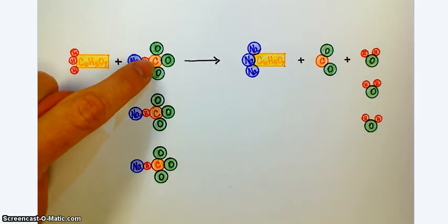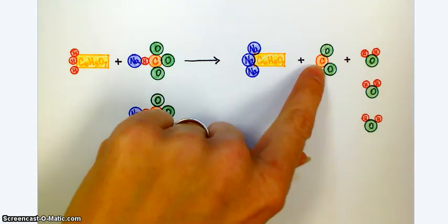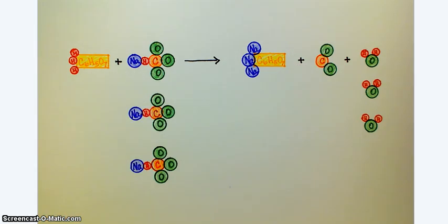But I still need to balance carbons. I have one, two, three carbons on the reactant side. And I only have one carbon on the product side. So let me fix that by adding two more molecules of carbon dioxide.